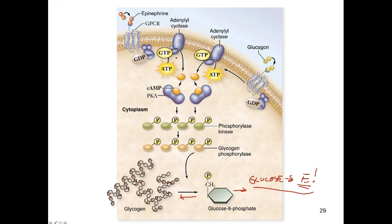Adenylyl cyclase is activated when epinephrine interacts with its G-protein coupled receptor. Adenylyl cyclase produces cyclic AMP, which activates protein kinase A. Protein kinase A phosphorylates a protein called phosphorylase kinase — this is another phosphorylation cascade pathway. When phosphorylase kinase is phosphorylated by protein kinase A, it in turn phosphorylates glycogen phosphorylase.